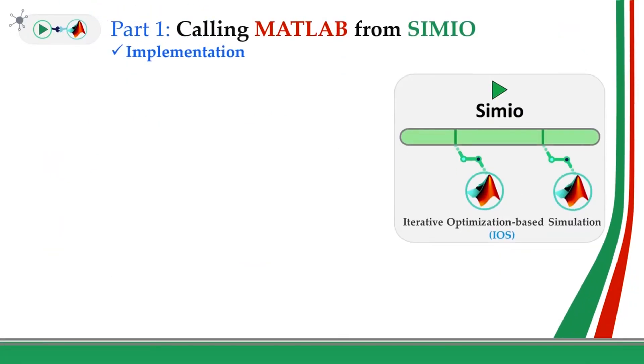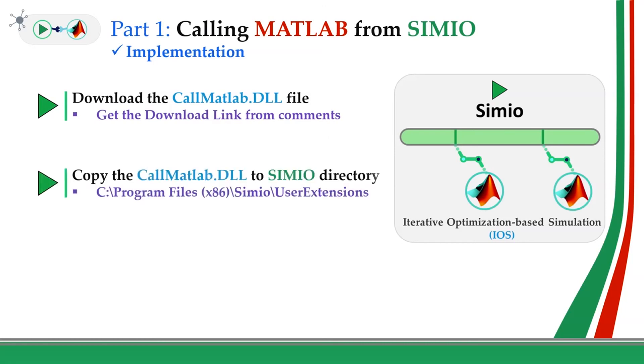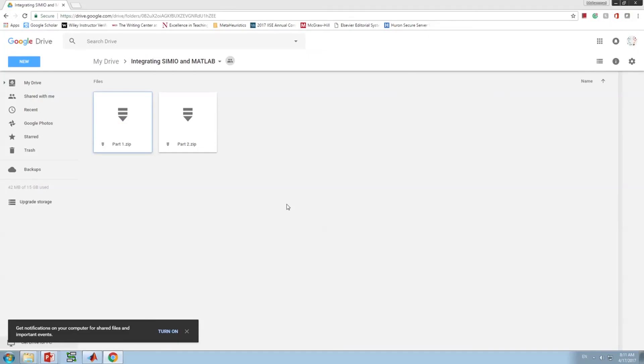Now, I want to talk about how we can implement this. Implementation is really easy and straightforward. You just need to download the call matlab.dll file. It's coded in C and it is available to you. So you can simply download it and copy that to the Simio directory. Once you copy this, you are going to see new step instance added to your MATLAB. Follow me to show you how you can get it downloaded and added to Simio.